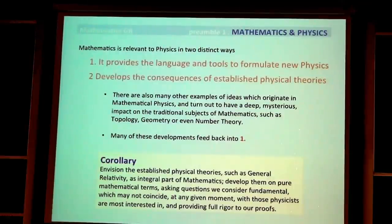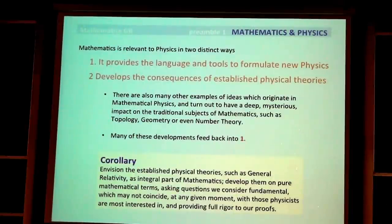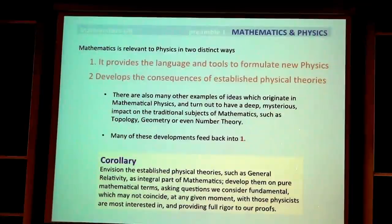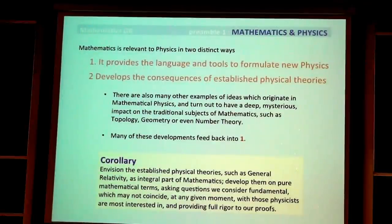I don't view mathematical general relativity as a subject of physics, but as a subject of mathematics. Once a subject like geometry has been formulated — originally it was the language of space, therefore used in physics — it becomes a part of mathematics and is then pursued by mathematicians as an integral part of mathematics: establishing the theory on pure mathematical terms, asking questions we consider fundamental, which may not coincide with what the physics might find most interesting. If the questions are fundamental, I think we are doing the right thing.